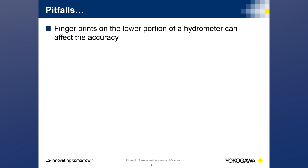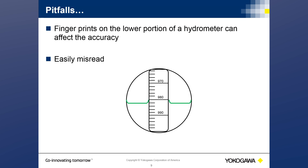Fingerprints on the lower portion of the hydrometer can also affect accuracy by interfering with how the solution interacts with the glass. Most commonly, hydrometers are easily misread. The measuring vessel has to be level and you need to know how to read them. Looking at the image shown here — is the proper reading 980 or 982? It's actually 982. To read a hydrometer, you look at the intersection of the horizontal liquid surface and the stem, not at the point where the liquid touches the hydrometer.